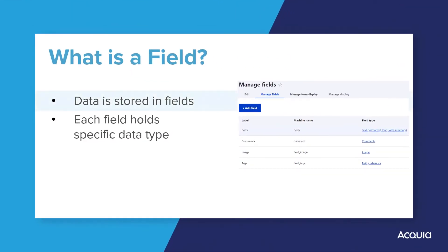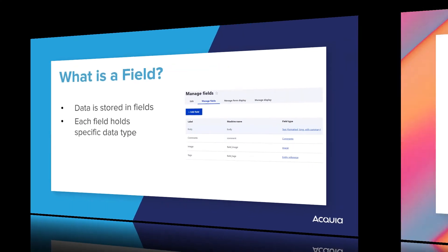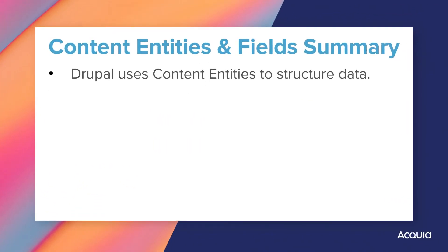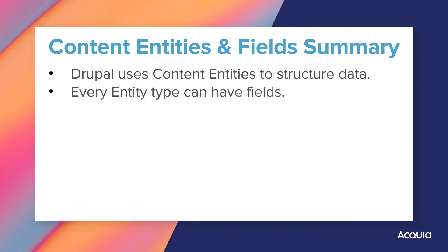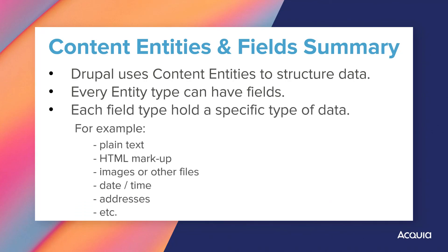The data is structured and stored in individual fields. Each field holds one type of data, such as plain text or HTML markup, images or other files, taxonomy terms, or dates. Field types are defined by Drupal core, such as the body field, or field types can be defined by additional modules. For example, there is a contributed address module which allows you to store address information. This is just a brief introduction and we will work with fields more than once in this course. Just remember that to structure data in Drupal, there are various entity types and every entity type has fields associated with it. Fields hold a type of data depending on their field type.